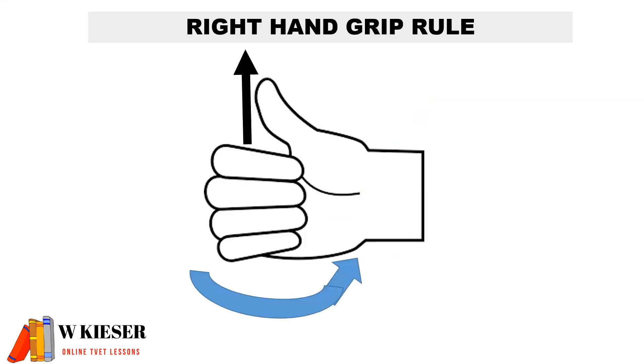Using the right-hand grip rule to grip a conductor, the thumb will point in the direction of current and the forefingers in the direction of the magnetic field.